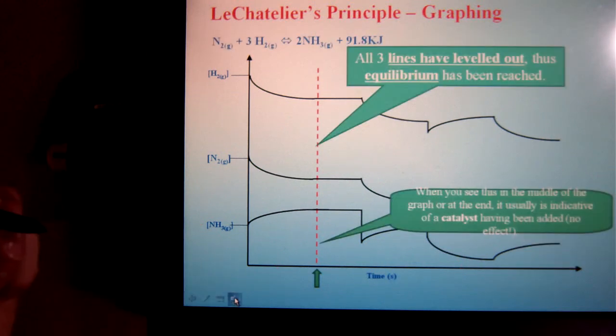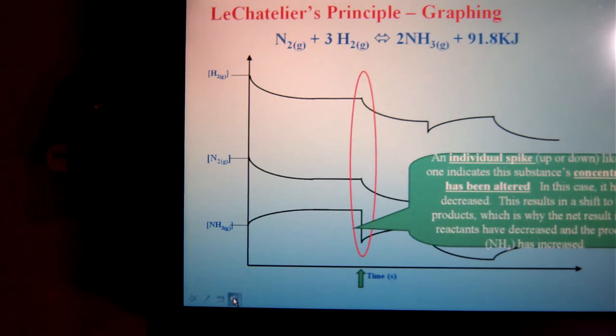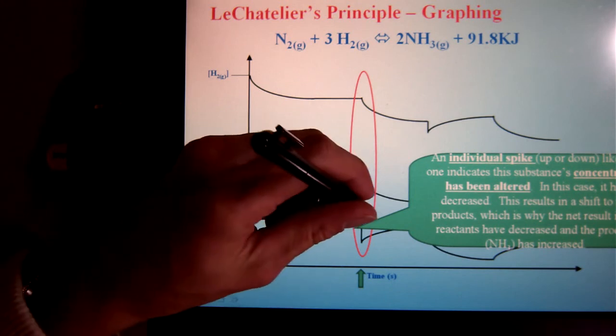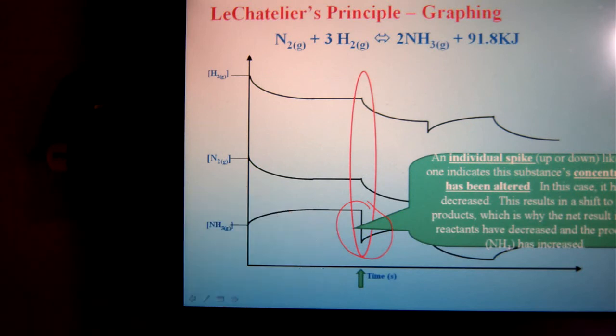So as it says here, all three lines have leveled out and it's been reached. When we see a large spike like we're seeing right here, that only means one thing. When you see the big spike, it means you've changed the concentration.